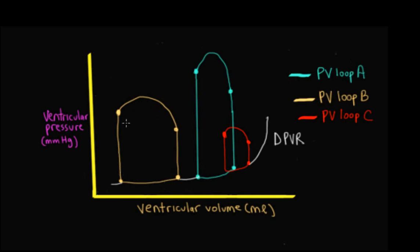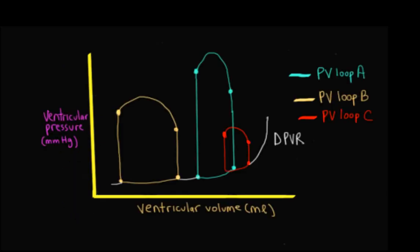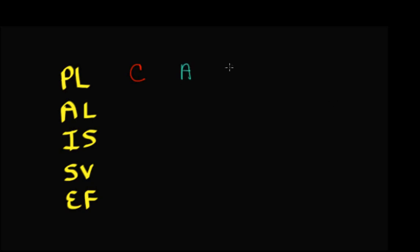Now we look at three different loops — PV loop B, PV loop A, and PV loop C — with the diastolic pressure-volume relationship drawn in but the end systolic pressure-volume relationship not drawn in. Let's compare preload by looking at the end diastolic volume. PV loop C is at a very high end diastolic volume, PV loop A has a lower end diastolic volume, and PV loop B has an even lower end diastolic volume. So the preload ranking is C greater than A greater than B.